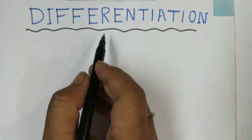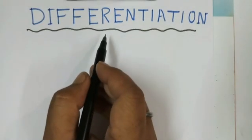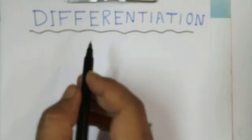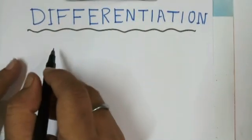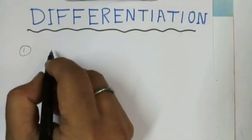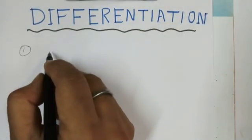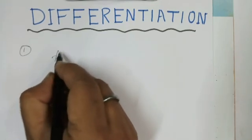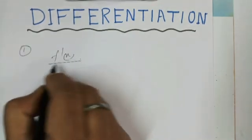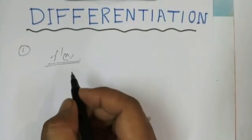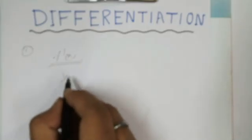Differentiation is the process by which we apply a function and find the derivative of any function. Topic note 1: differentiation coefficient. The differential coefficient of f(x) is denoted by f'(x). This is the differential coefficient, the derivative. Let's see where it comes from.